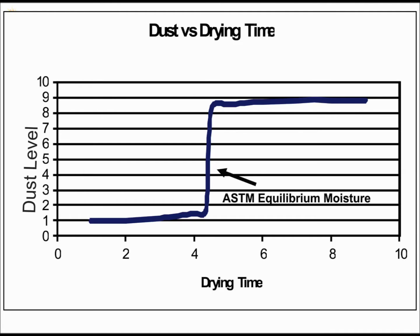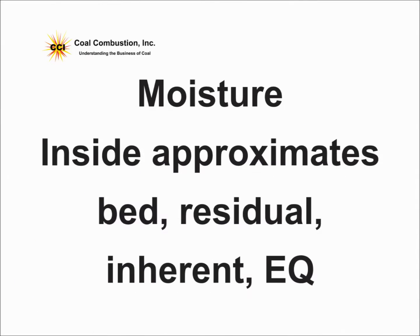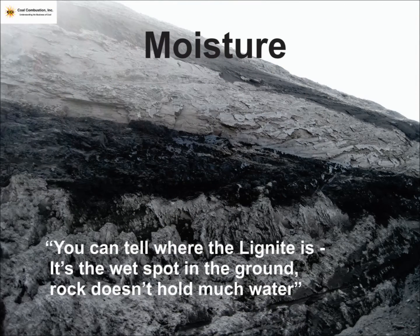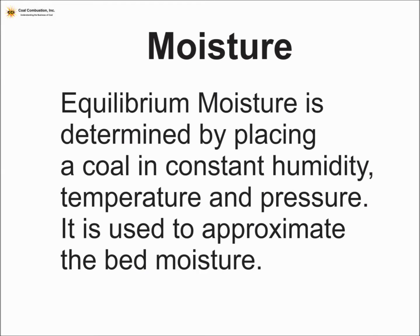This equilibrium or bed type moisture — sometimes called the residual moisture in the actual ASTM test — is that moisture that the coal has even when it's underground. Before it's mined and broken up into chunks and exposed to the environment, that's the moisture we're trying to get at. One lignite mine told me you can tell where the lignite is because that's where the wet spot is in the ground — the rock doesn't hold much moisture. Equilibrium moisture is a test where we look at the moisture a coal will hold at a constant humidity, temperature, and pressure, and this approximates that bed moisture.